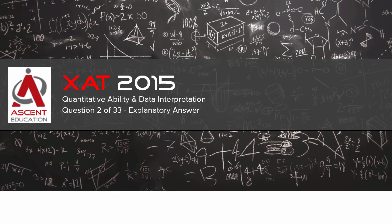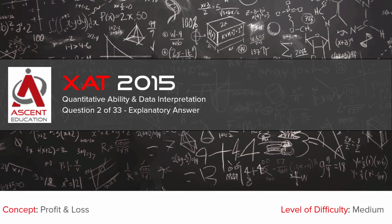This question appeared in ZAT 2015, Quantitative Ability and Data Interpretation section. It's question 2 of 33. The question appeared from the topic Profit and Loss. It's a medium level difficulty question.